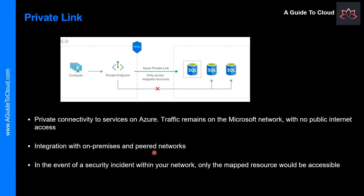So how does it work? Use Private Link to bring services delivered on Azure into your private virtual network by mapping it to a private endpoint, or privately deliver your own services in your customer's virtual network. All traffic to the service can be routed through the private endpoint — so no gateways, NAT devices, ExpressRoute, VPN connections, or public IP addresses are needed. Private Link keeps traffic on the Microsoft global network.